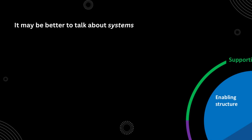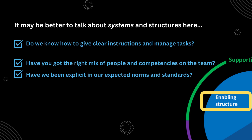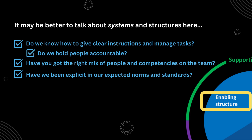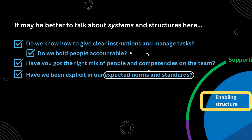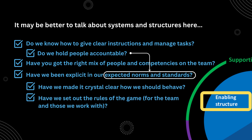Third, teams need enabling structures. Teams that have poorly designed tasks, the wrong number or mix of members, or fuzzy and unenforced norms of conduct invariably get into trouble. We need to consider how we define and design tasks, whether people know what is expected of them, and whether they're held accountable when they don't act in certain ways. It's easy to measure output, but in team dynamics we often overlook the behaviors by which people are operating — and very often it's those behaviors and habits that get in the way of effective teams.